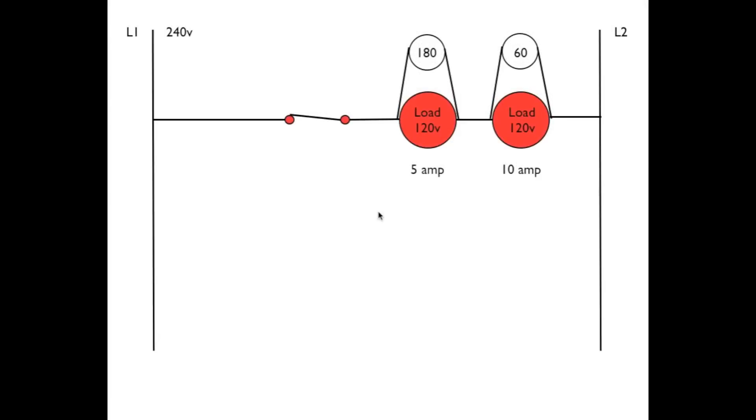Now let's look at this. I've added something here. I noted that these loads are 120 volts each. This one's a 10 amp load, this one's a 5 amp load. So under normal operating conditions, the one on the left will draw 5 amps and the one on the right will draw 10.